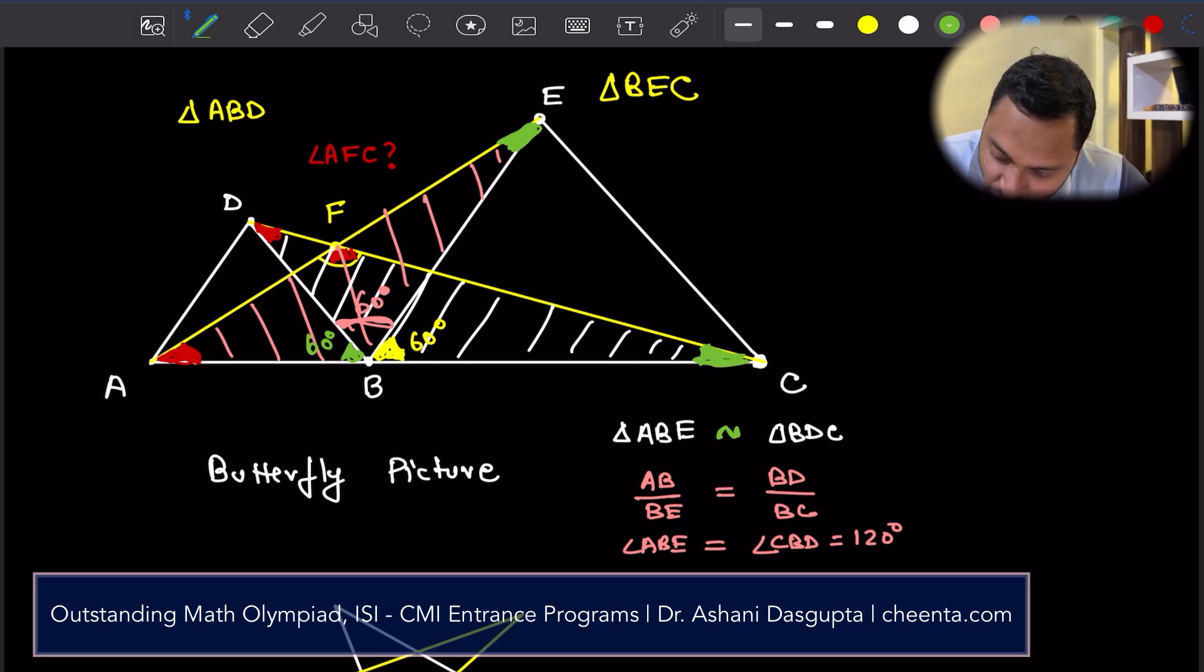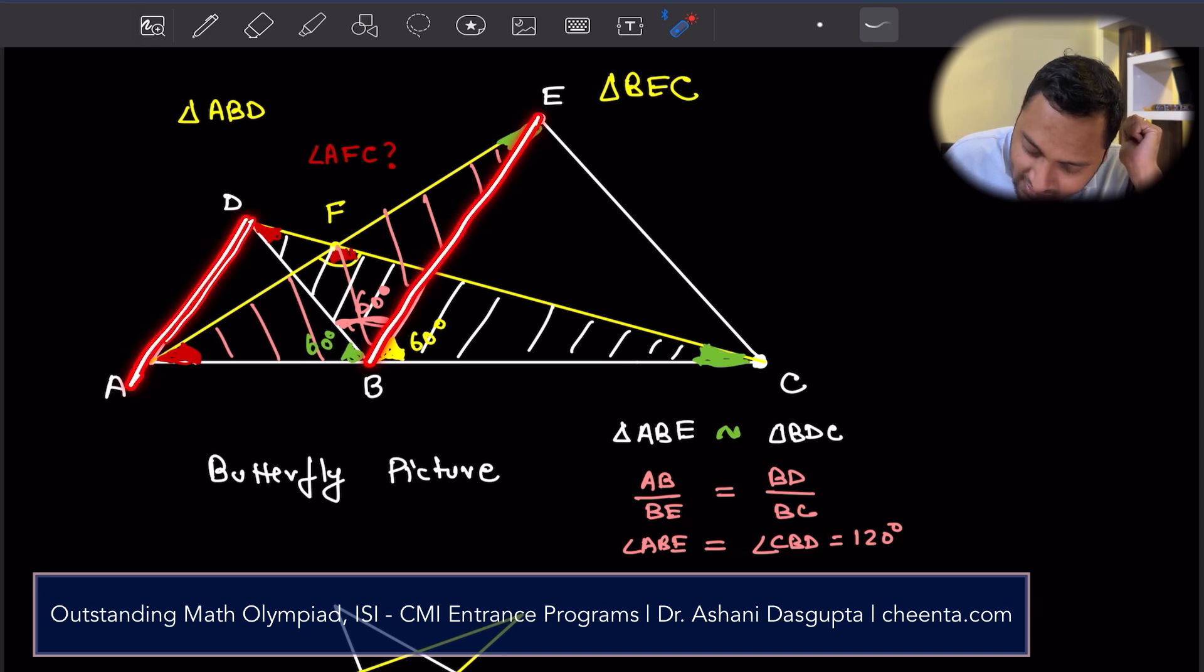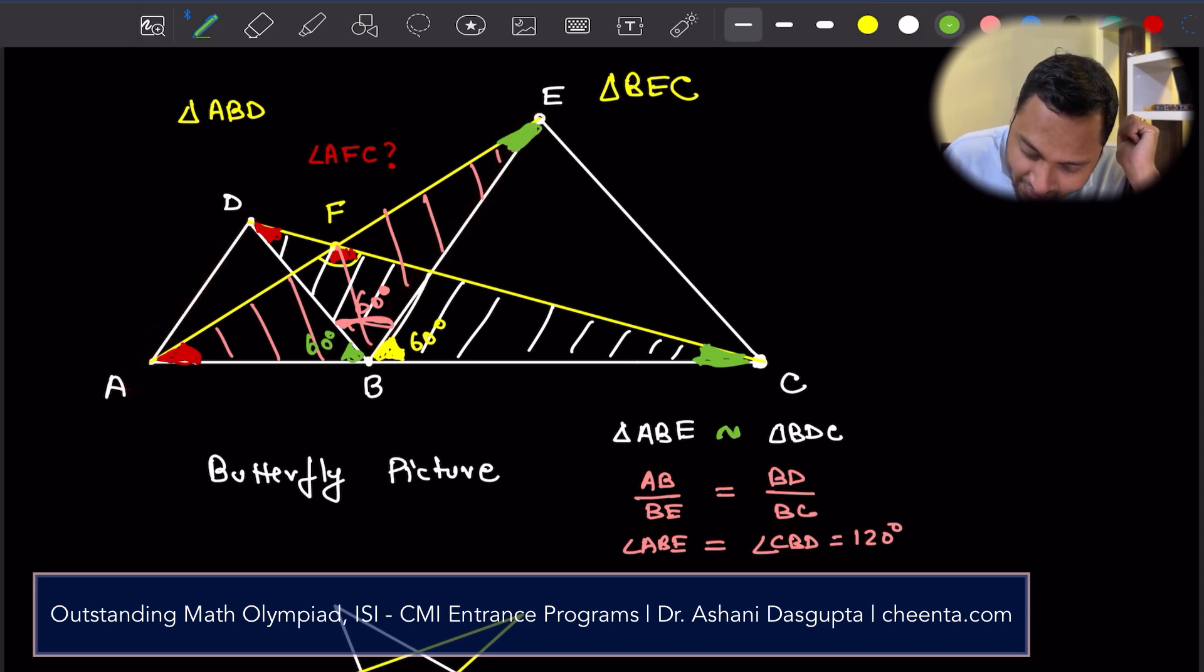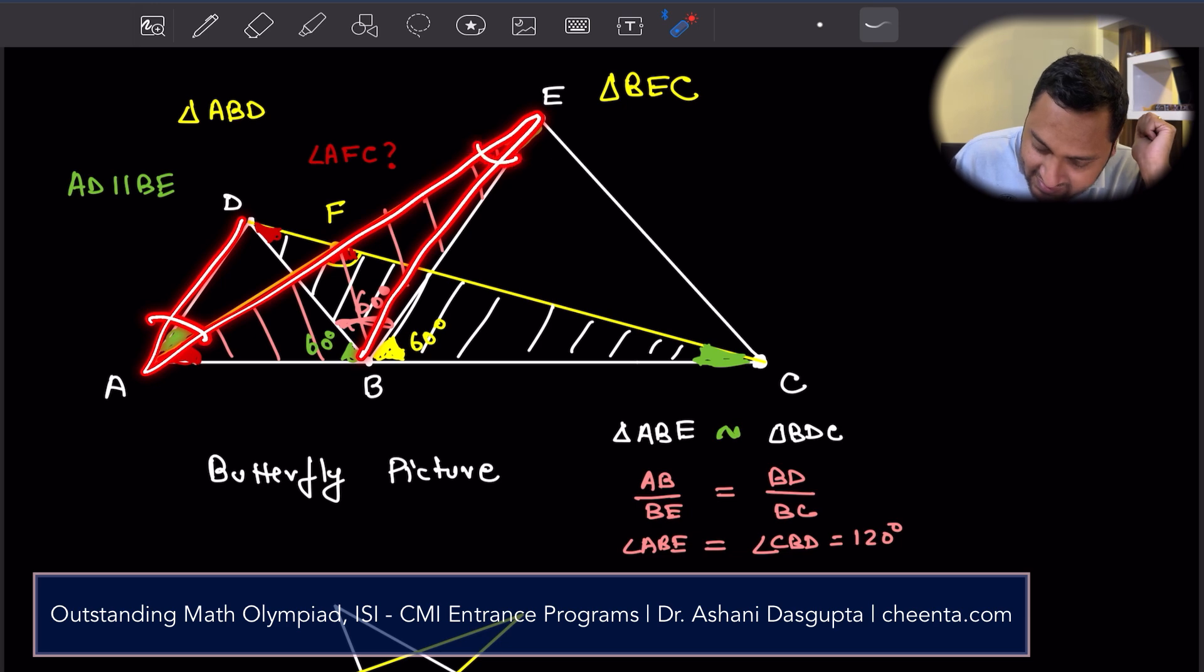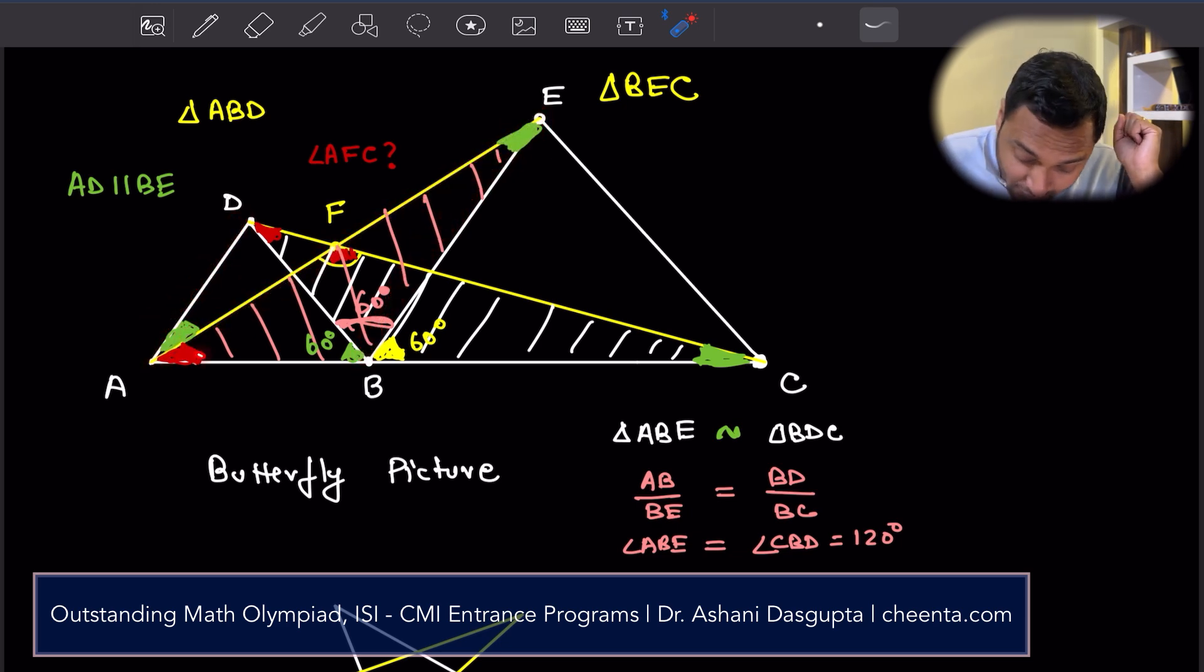Now let's do the final construction. There are a couple of ways you can approach this. It's almost done actually. One is that you notice that these two are parallel. AD and BE are parallel. AD is parallel to BE. So this angle is also the green angle because they are alternate angles, right? This angle and this angle are equal. So this is also green. So red plus green is 60 degrees.